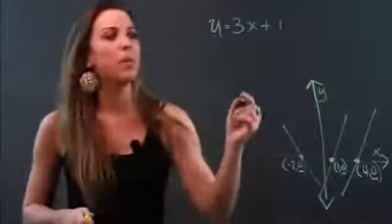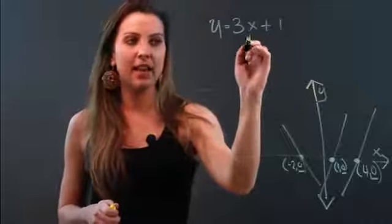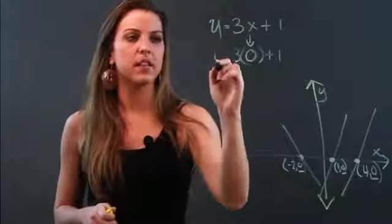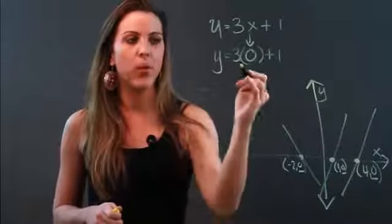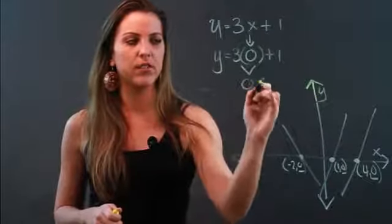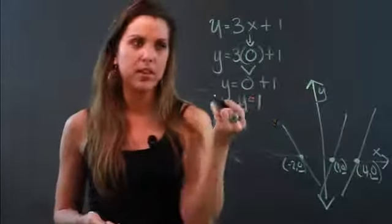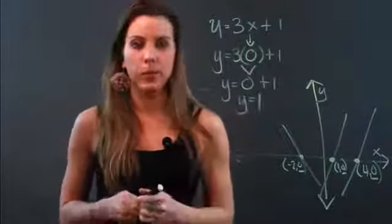So what I'm going to do now is replace my x with 0 and bring down everything else and solve for y. So when x is 0, that's 0 plus 1, y equals 0 plus 1, y equals 1. So my y-intercept would be 1.